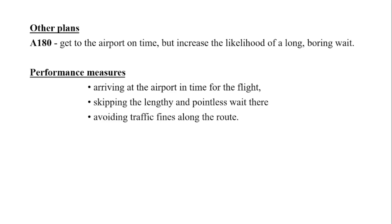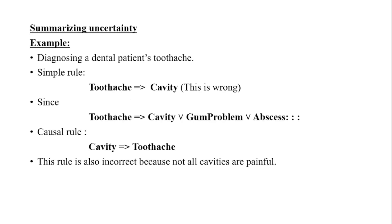Let's see another plan, also named A-90. This plan might increase the agent's belief that it will get to the airport on time, but also increases the likelihood of a long and boring wait. The performance measures associated with the plans are: first, arriving at the airport in time for the flight; second, skipping the lengthy and pointless wait at the airport; third, avoiding traffic fines due to traffic violations along the road. The agent's knowledge cannot guarantee any of these outcomes for plan A-90, but it can provide some degree of belief that they will be achieved. Hence, the rational decision depends on the relative significance of multiple goals as well as their possibility and degrees of achievement.